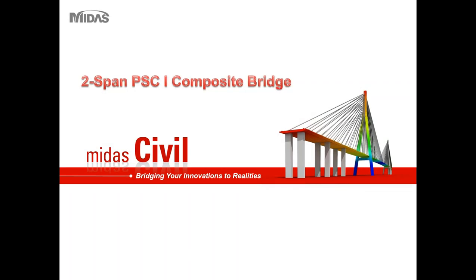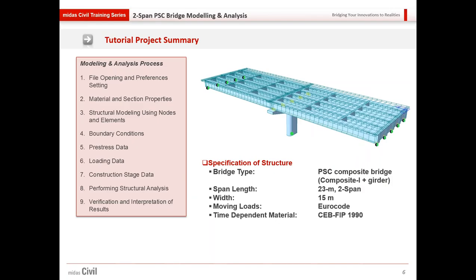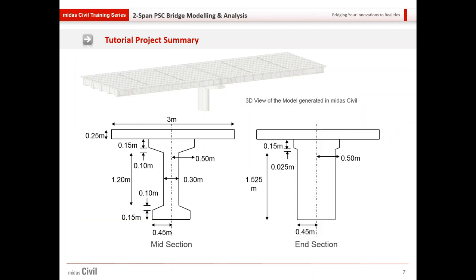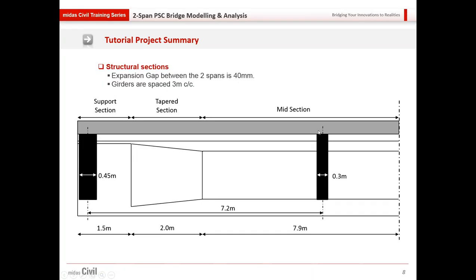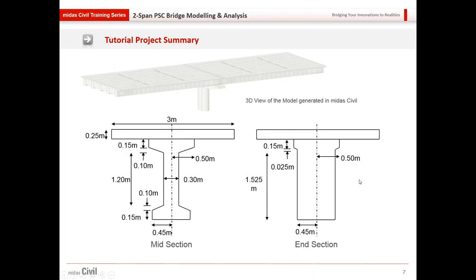I'll give you the details on a 2-span PSC I-girder and slab bridge, which will be a non-continuous bridge. The transverse width of the bridge will be 15 meters. The moving load codes will use Eurocode, and for time-dependent properties we'll be defining as per CEBFIP. We'll be defining cross sections — the thinner one for the midsection and the thicker section for the end section.